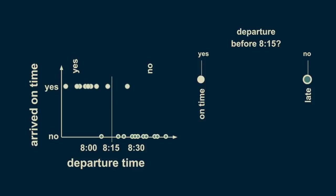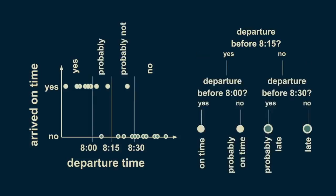We can refine our estimate of punctuality by subdividing both the before 8:15 and the after 8:15 branches. If we add additional decision boundaries at 8 o'clock and 8:30, then we can divide up our arrival estimate more fully. Those before 8 o'clock are confidently on time. Those between 8 and 8:15 are probably on time, but not guaranteed to be so. Similarly, departure times after 8:15 can be divided into those after 8:30, which are almost certainly late, and those before 8:30, which still have a small chance of being on time. This decision tree has two levels. Decision trees can have as many levels as you want. Most often, each decision point or node has only two branches.